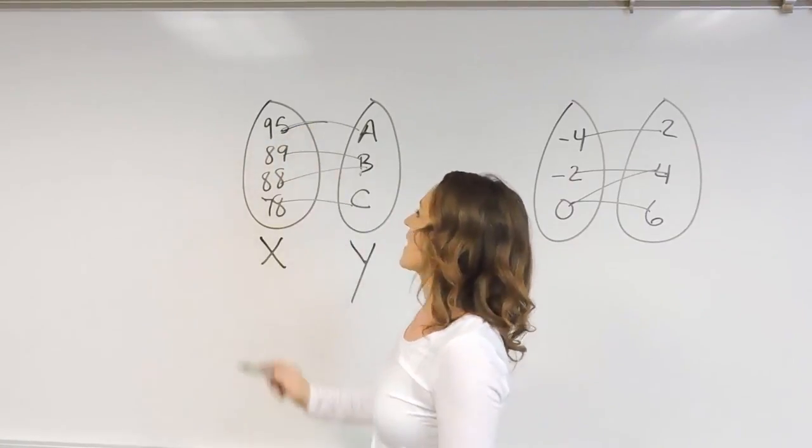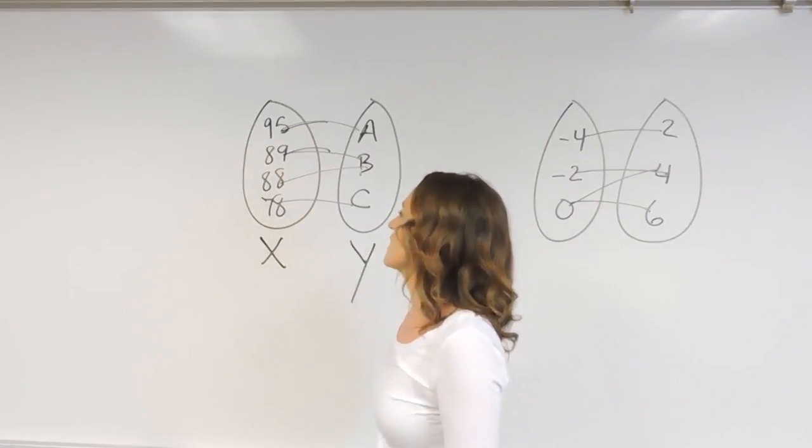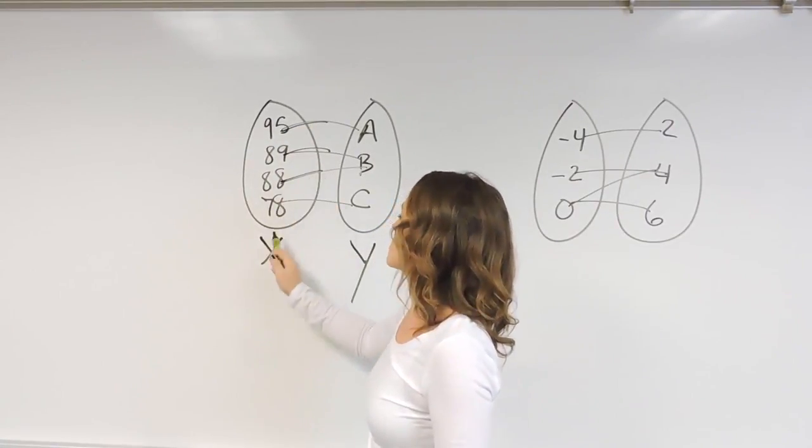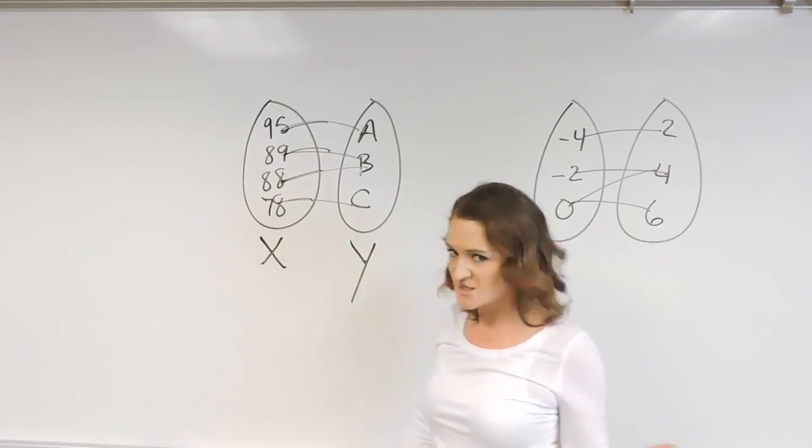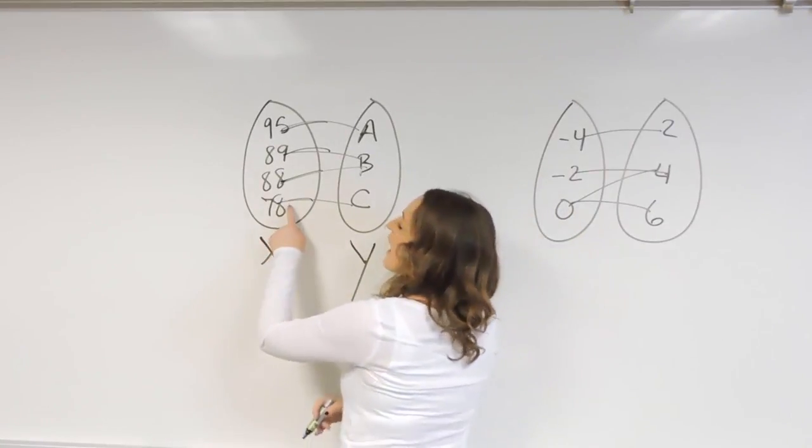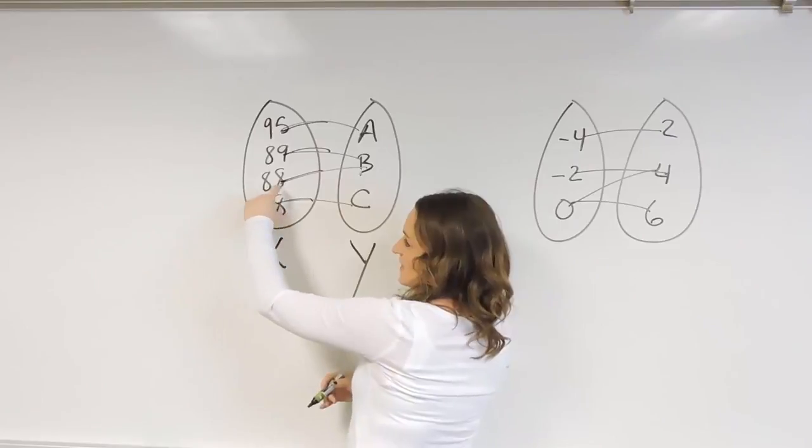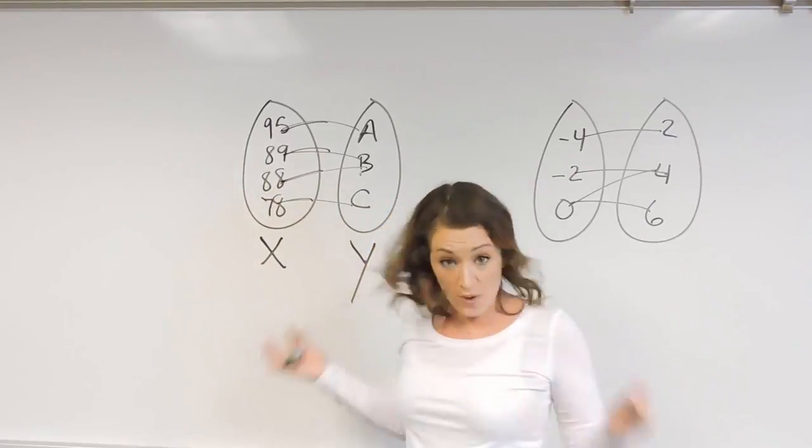So 95 is only going once, 89 is only going once, 88 is going once, 78 is going once. So because I don't have more than one line going from each thing, then we're good.